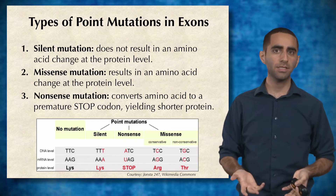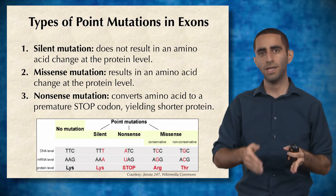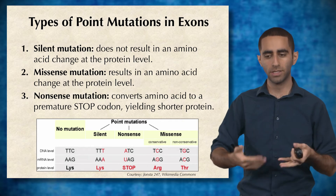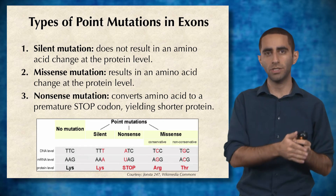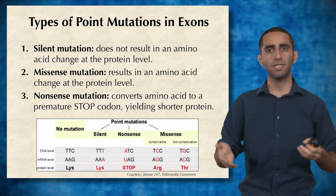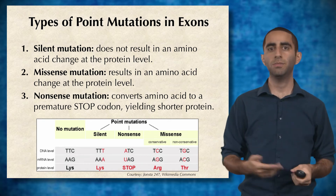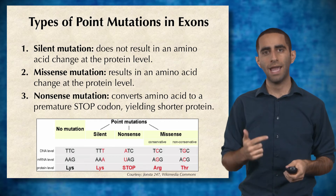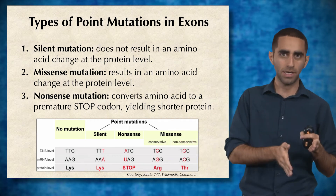A nonsense mutation converts one amino acid in the protein into a premature stop codon. A stop codon tells the machinery that's translating the protein that the protein is done — chop it off here. The result is an extremely truncated protein. So in summary: silent mutations produce no change, missense mutations produce a single amino acid change at the protein level, and nonsense mutations result in significant chunks being cut off the protein.